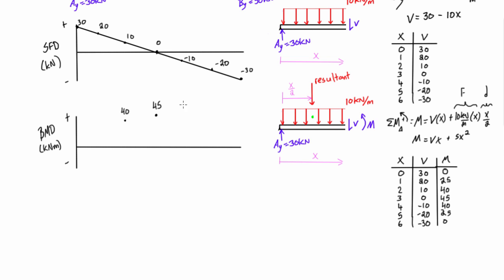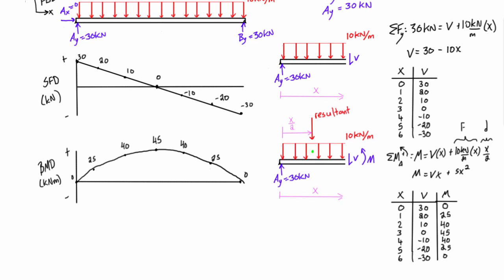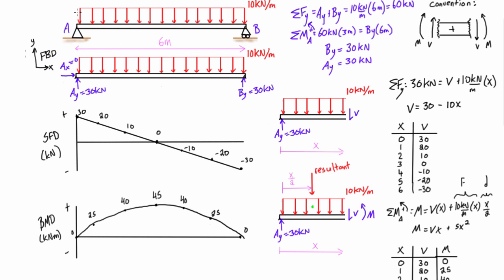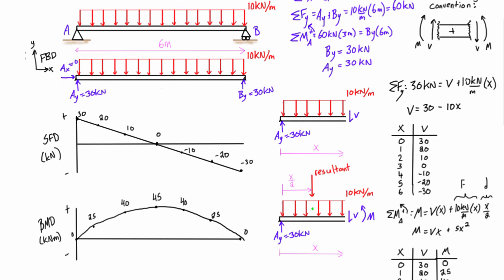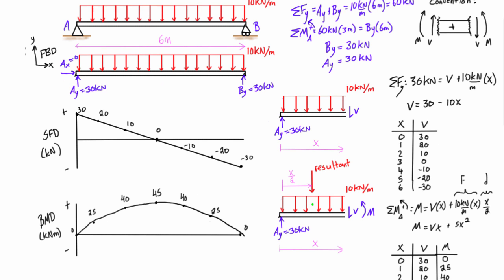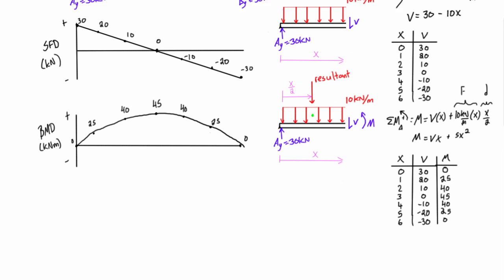And there we go we have the whole bending moment diagram and we can plot any point along here but this is pretty good. It shows that we're getting this parabolic curve which is actually what we expect when we have a constant distributed load like this. So constant distributed loads will give us a shear force diagram with a triangular shape and then we see our bending moment diagram always with that parabolic shape for constant distributed loads.